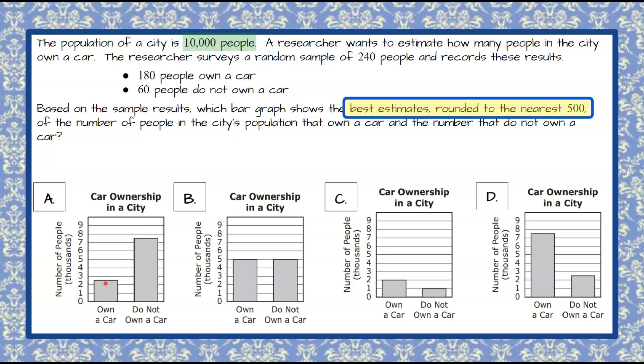This bar graph, own a car, has 2,500 people. So the number of people here is represented in thousands. So if I go to this bar and go over to my axis, my y-axis, it is halfway between two and three, which is 2.5. In thousands is 2,500. So do not own a car is going to be 7,500. That together has a sum of 10,000, so it could be graph A.